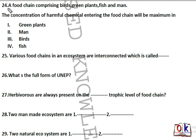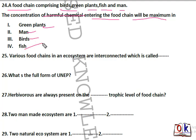Question number 24: a food chain comprising birds, green plants, fish, and men — the concentration of harmful chemicals entering the food chain will be maximum in which? In a food chain, toxic chemicals increase in concentration at each trophic level — that process is known as biological magnification. Man will be the right answer as concentration is maximum at the highest trophic level.